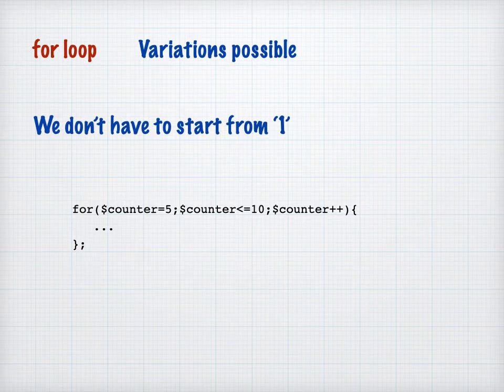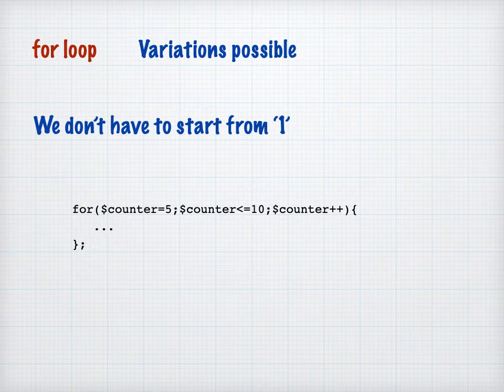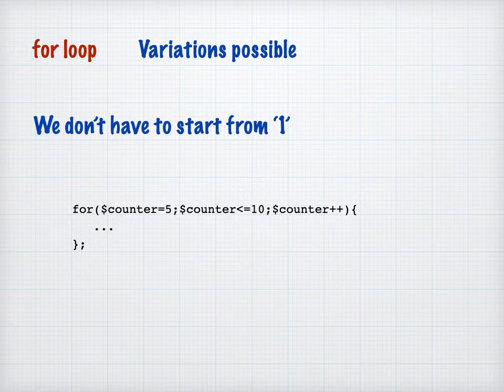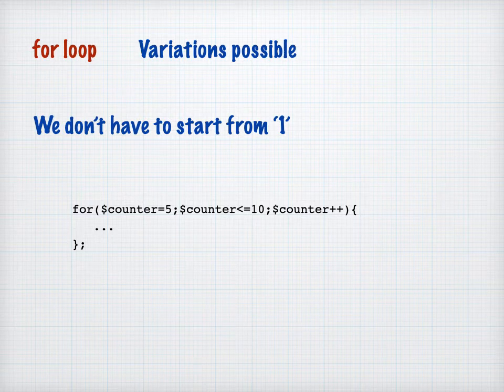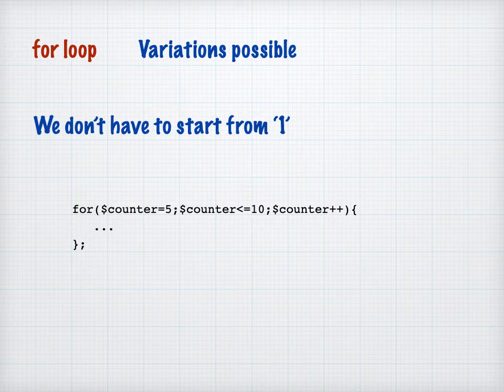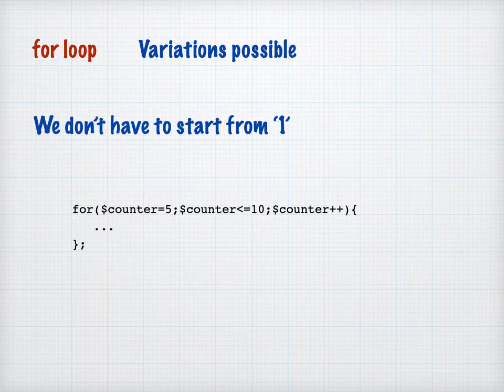So if you look at the first bit before the first semicolon, you can see here it says counter equals five. So in this instance, our counter will start from five. And if we just process this loop, think about what's actually going on here. It says the initial value for counter would be five. Our test says keep on doing the loop while counter is less than or equal to 10. And what will we do? Each time we go around the loop, we're going to add one to counter.